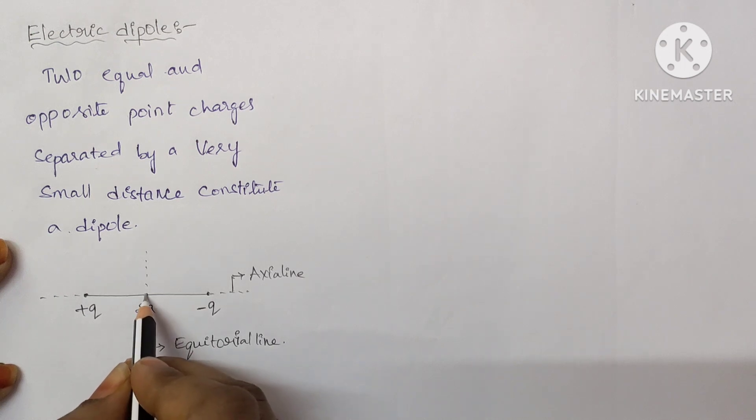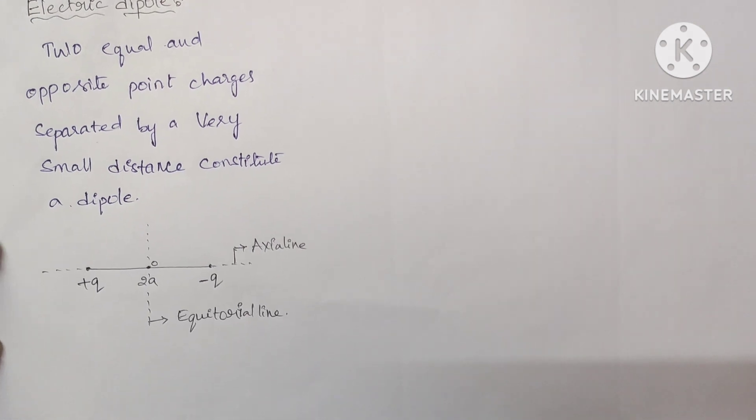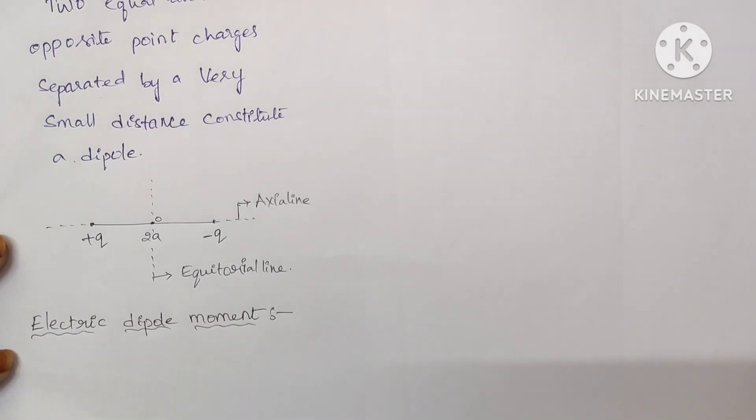The midpoint between these two lines is called the center of the dipole. Next, let us see about electric dipole moment. Let us see the definition.